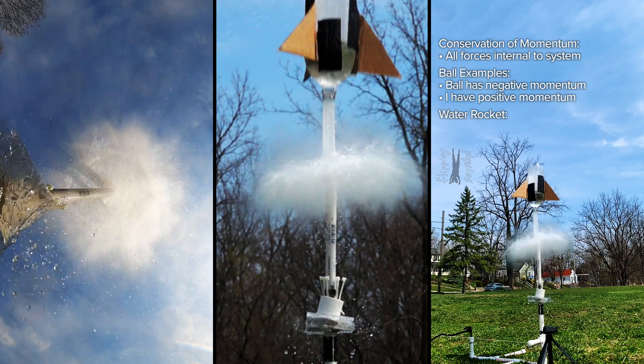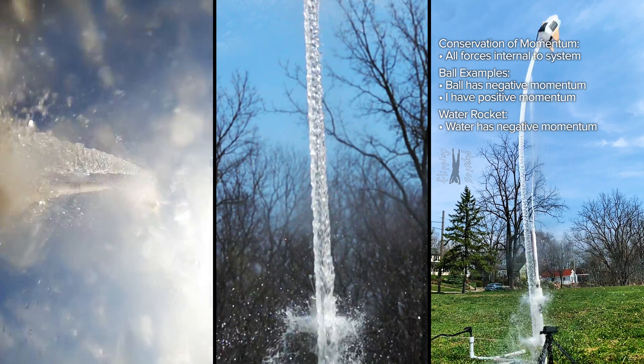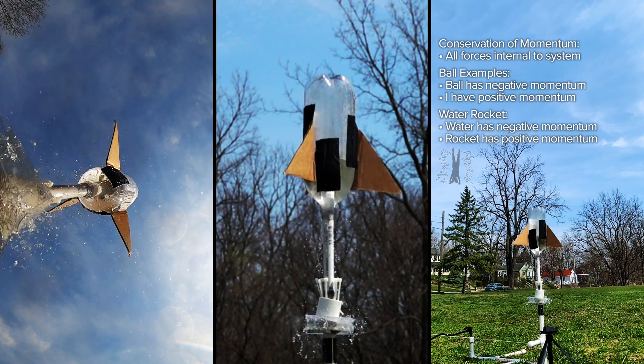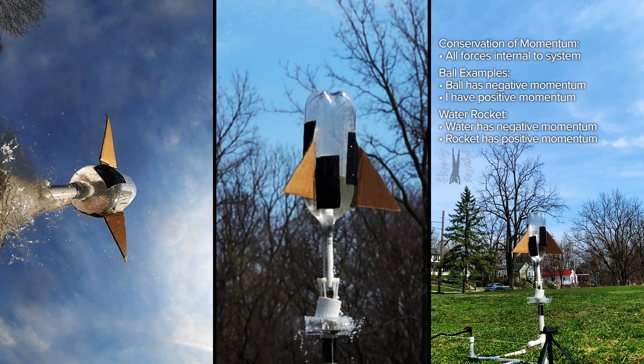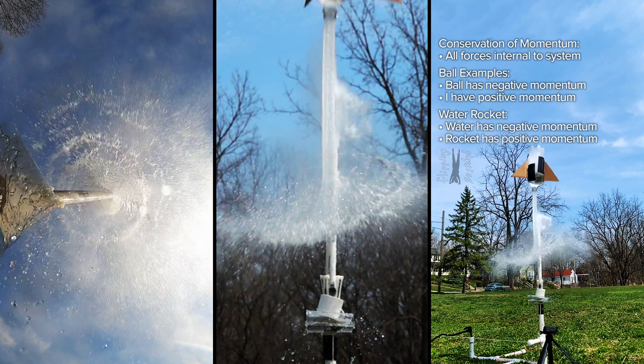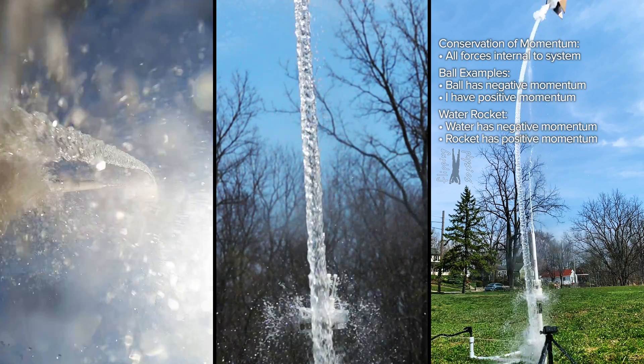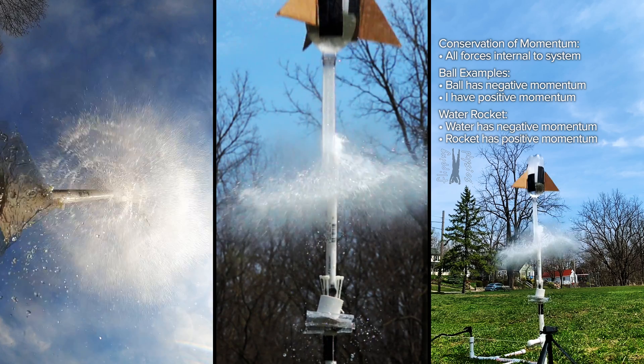The water molecules have downward momentum and the rocket has upward momentum. Each water molecule is just like a microscopic medicine ball being pushed downward by the rocket causing the rocket to move upward. That is how a rocket works.